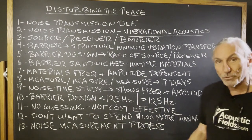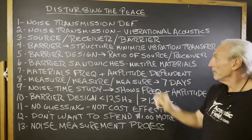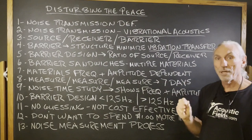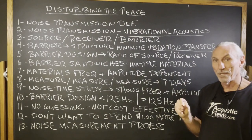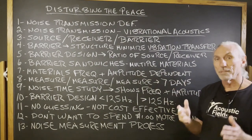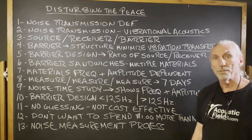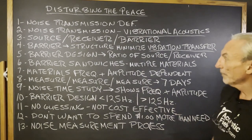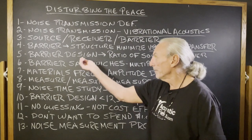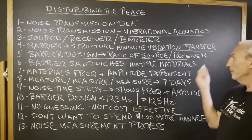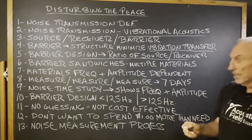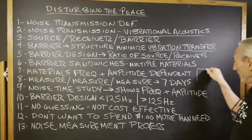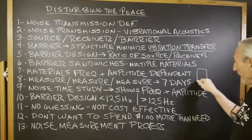In order to stop the vibration or the noise, we have to build a barrier between the source and the receiver. The structure that we build has to be focused on the transfer of vibrational energy. We have to minimize the vibrations through the solid material or the barrier. The design is always a ratio — we have a room, we're creating noise, and the noise is leaking out.